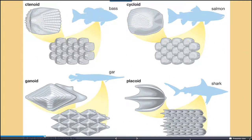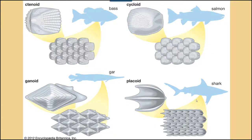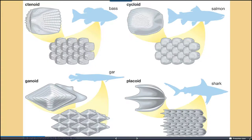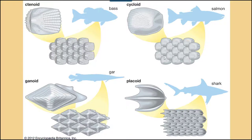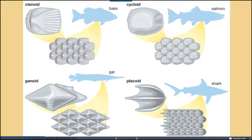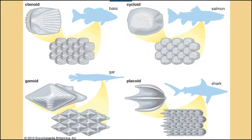Taking a closer look at scales: sharks have a placoid shape that makes them smooth when touched one way and sharp and pointy the other way. If you've ever touched shark skin, you'll have felt that rough-in-one-direction, smooth-in-the-other quality. Fish can have quite a variety — the other three scale types shown are from salmon, bass, and gar. These are generally slightly overlapping, except the ganoid scales, which are devoid of sharp pointy bits.